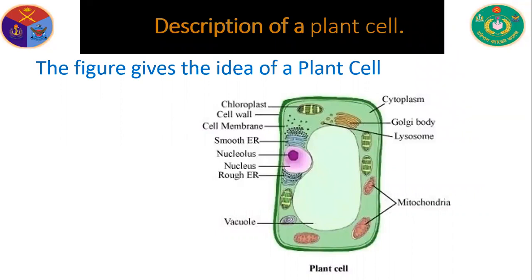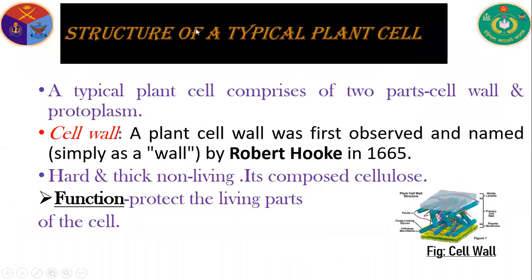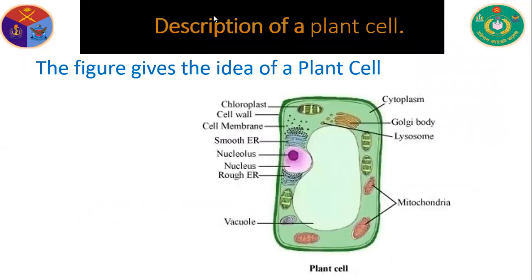You can see the diagram of a plant cell. Let's look at the picture. This is a typical plant cell. Its structures include the chloroplast, cell wall, cell membrane, smooth endoplasmic reticulum and rough endoplasmic reticulum.